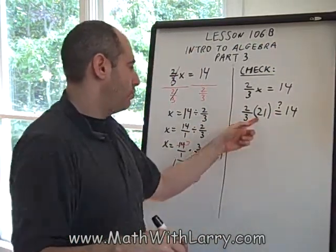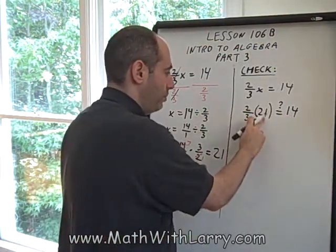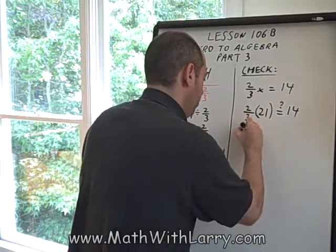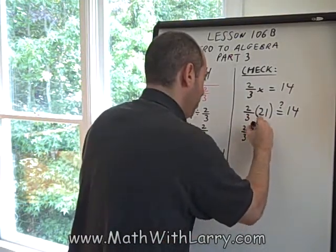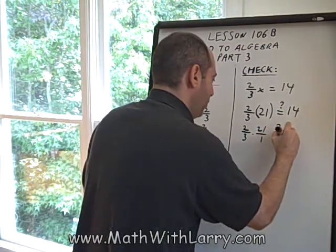Now, since we're going to be multiplying a whole number times a fraction, remember it's a good idea to rewrite that, rewrite the 21 as a fraction. 2/3 times 21/1. Does that equal 14?